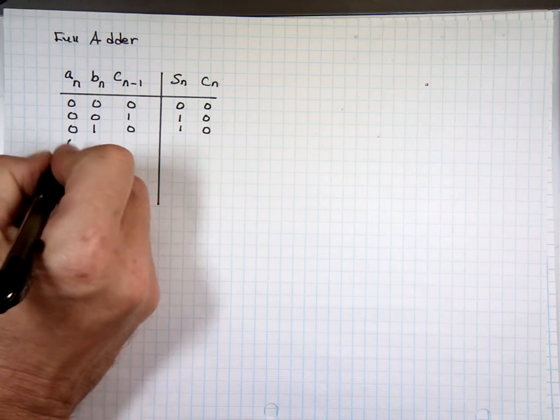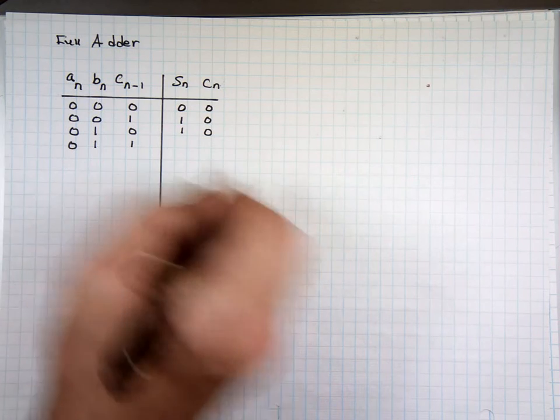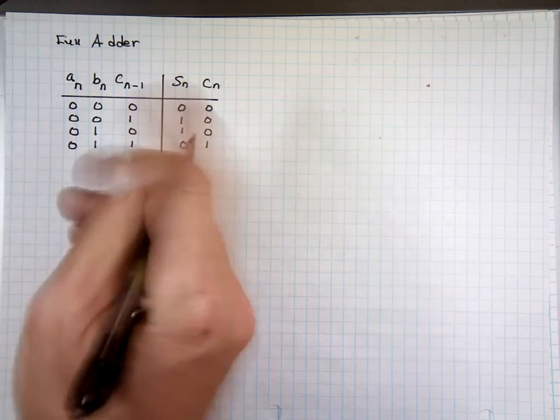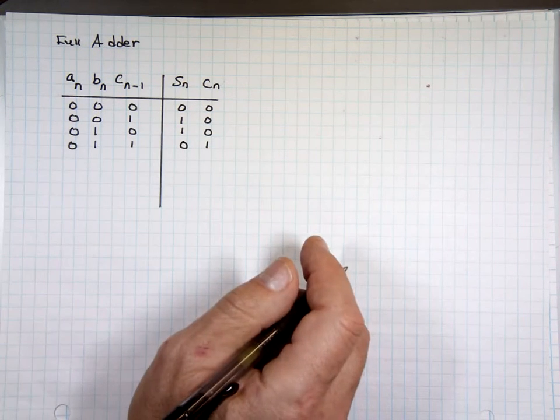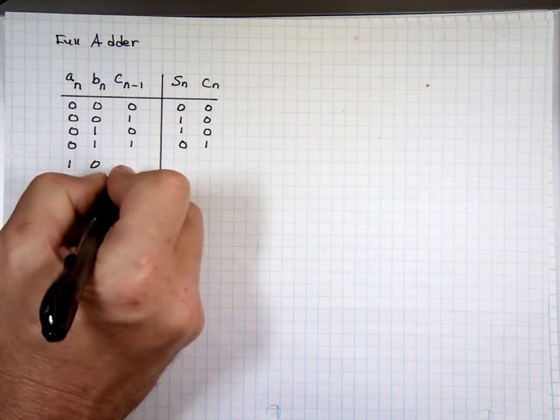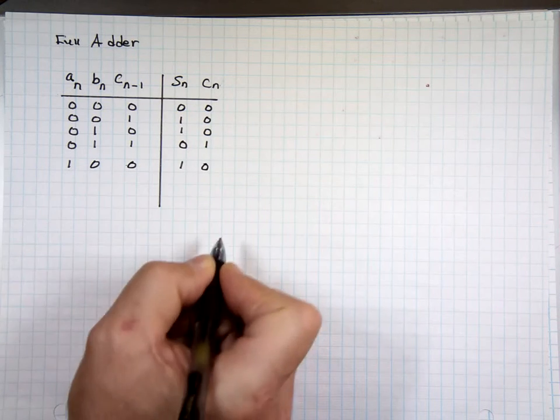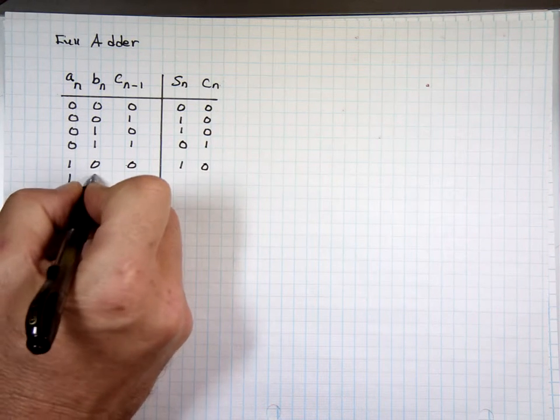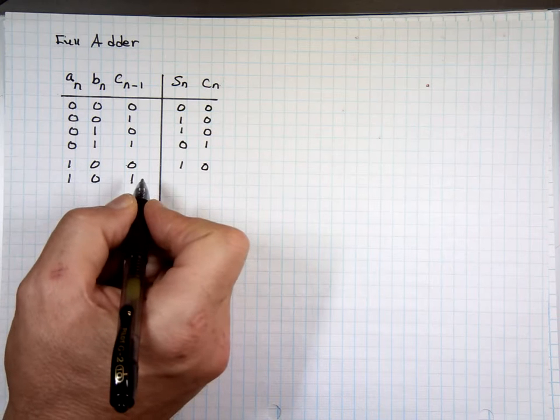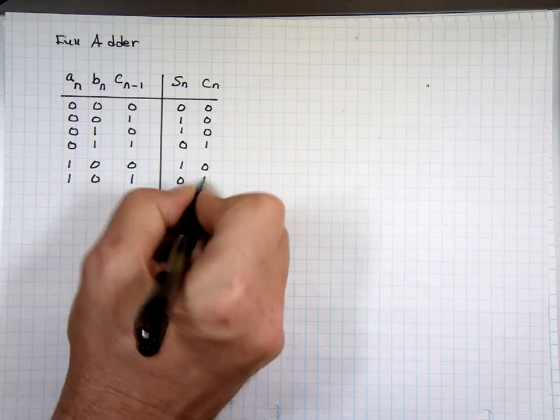If you have 0, 1, 1, that's a 2, right? So 0, carry 1 to the next state. If you have 1, 0, 0, that's a 1 and no carry. 1, 0, 1, that's 2. That's 0, carry 1, right?